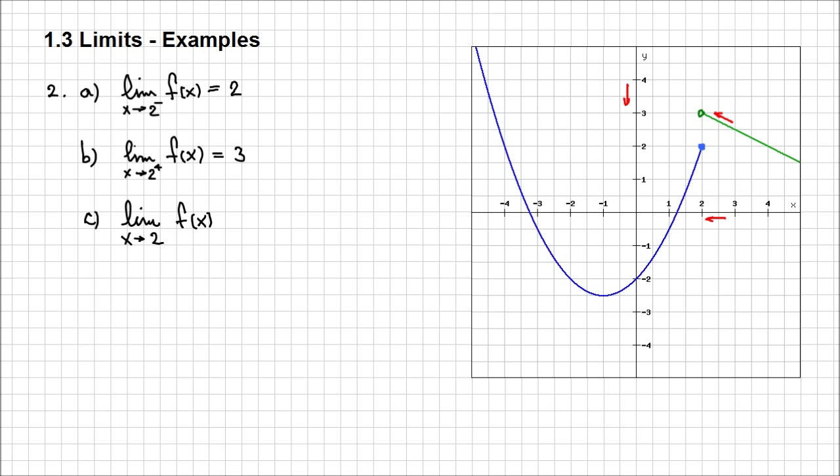Now, based on the definition, because the left limit and the right limit exist, but they are not equal, we can say that the limit of f(x), when x approaches 2, does not exist.